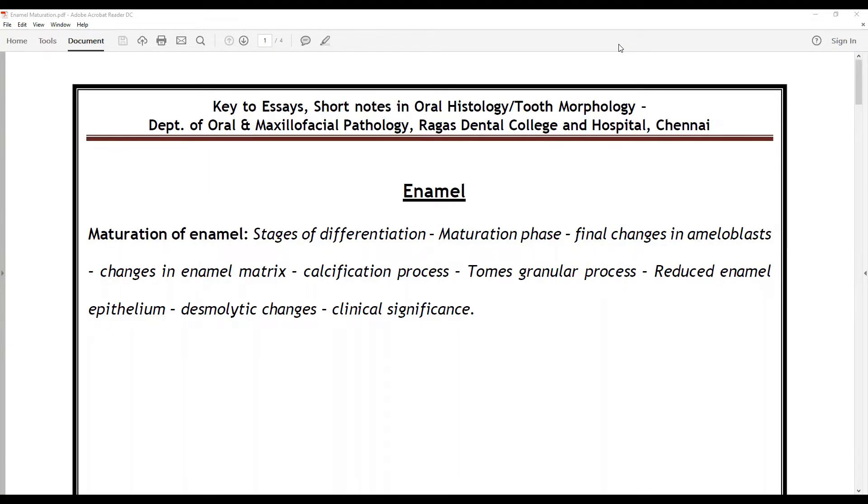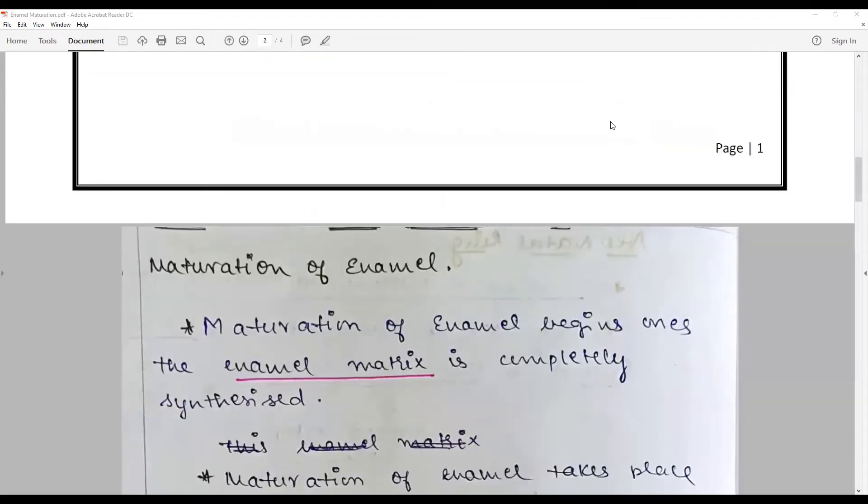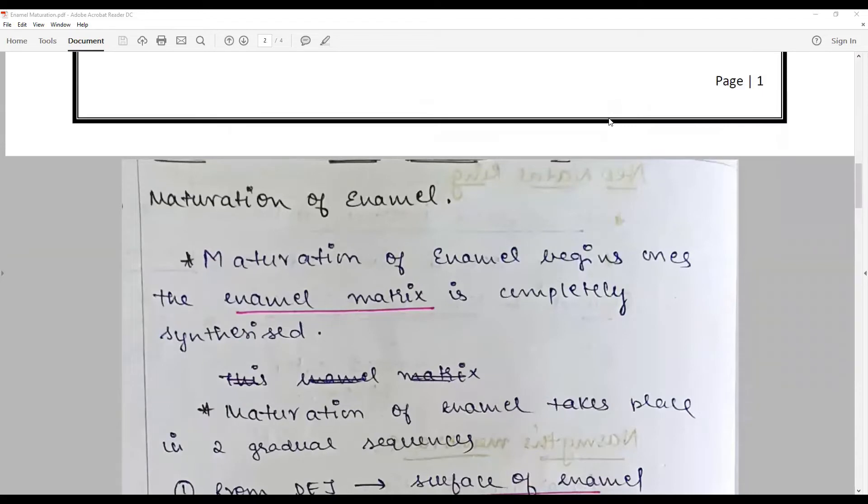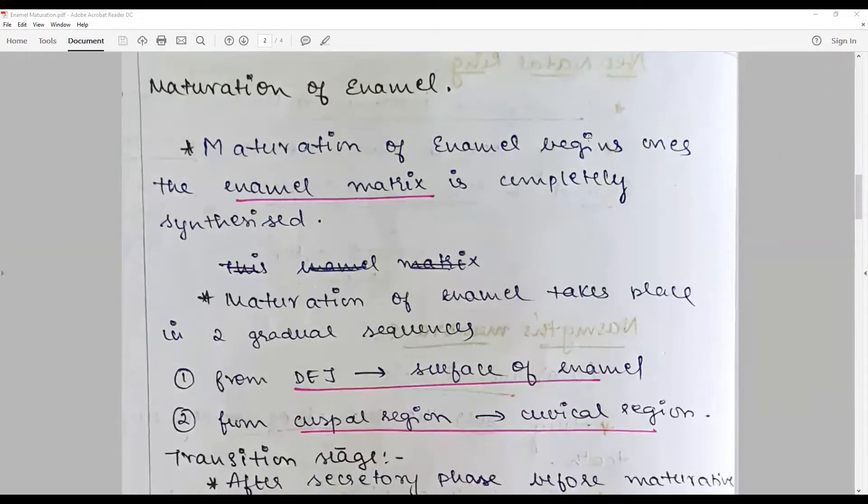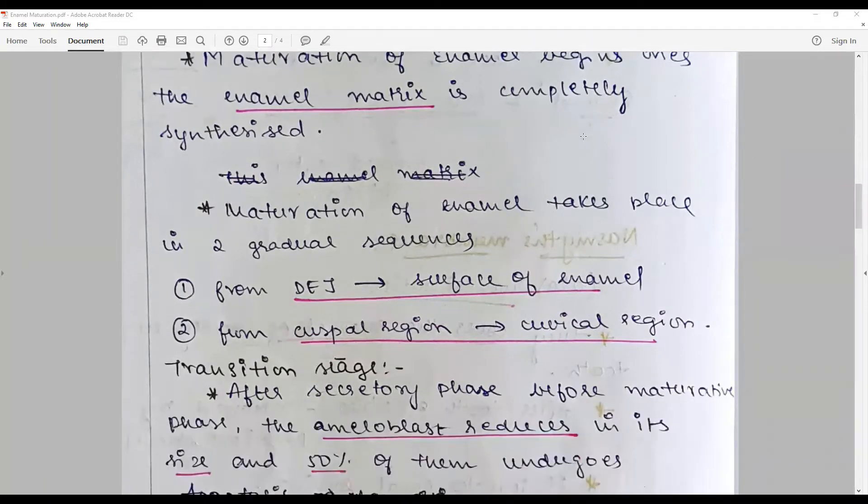To go with the model answer: the maturation of enamel begins when the enamel matrix is completely laid down and takes place in a gradual sequence, usually from the DEJ towards the surface of the enamel, from the cuspal region to the cervical region. There is a transition phase after the secretory phase before the maturity phase.